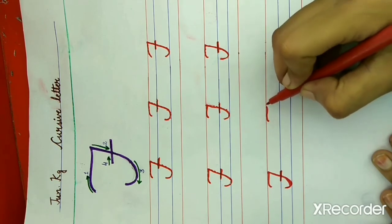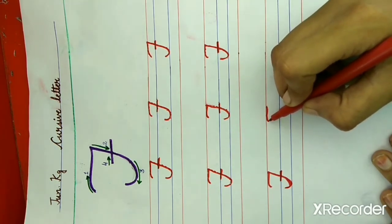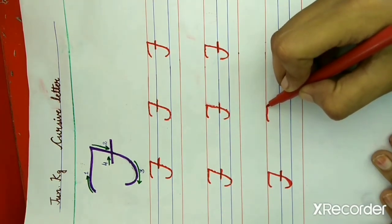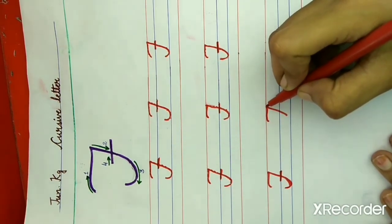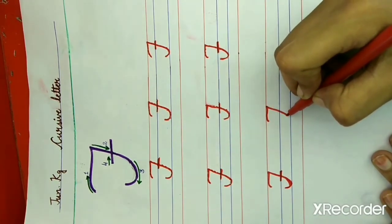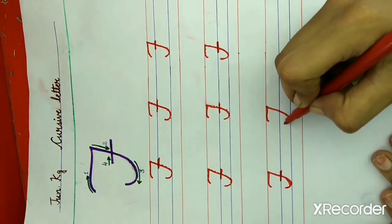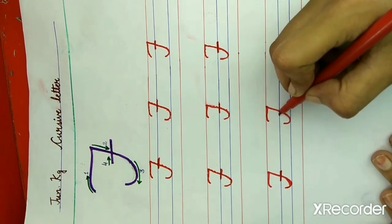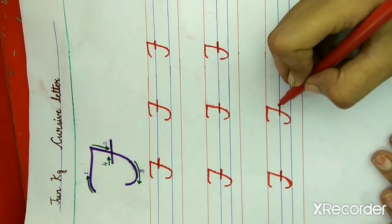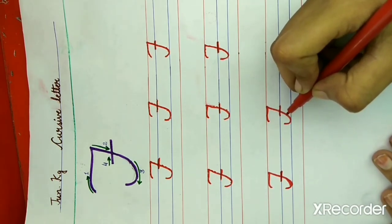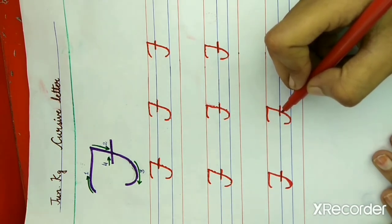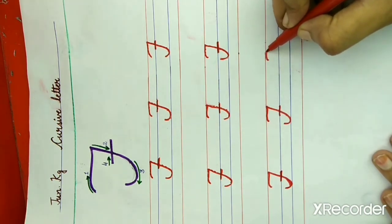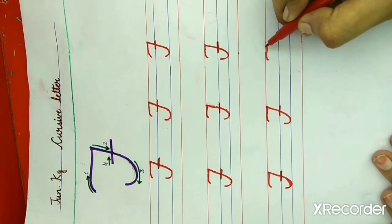Now again draw a small curve line on the red line. First: a curve line to the red line. Then draw a slanting line from the red line to the blue line. Draw a small semicircle, and last one is slipping line on the first blue line. What is this? This is letter F. F for fish. What is the spelling of fish? F-I-S-H. Fish.